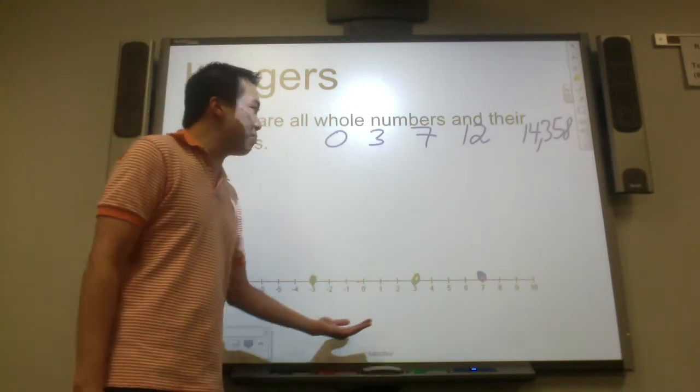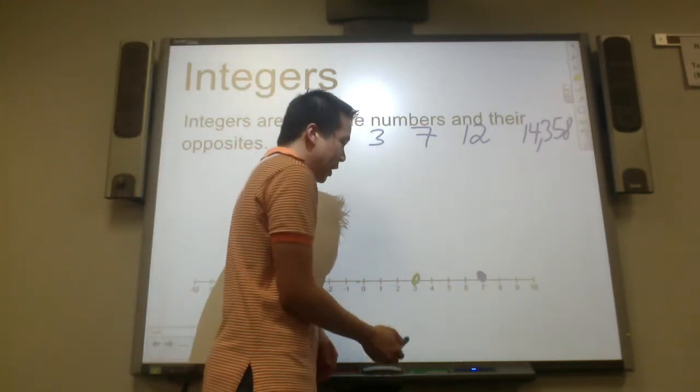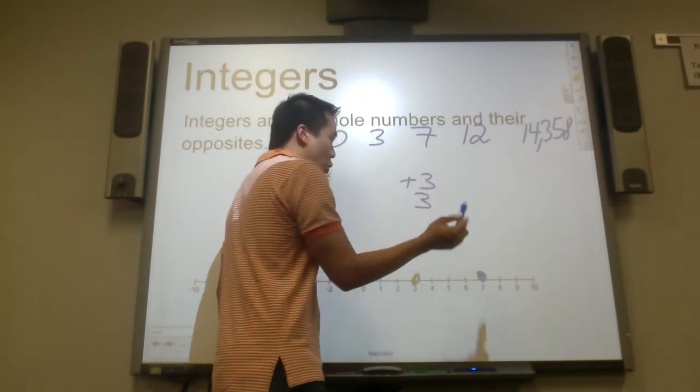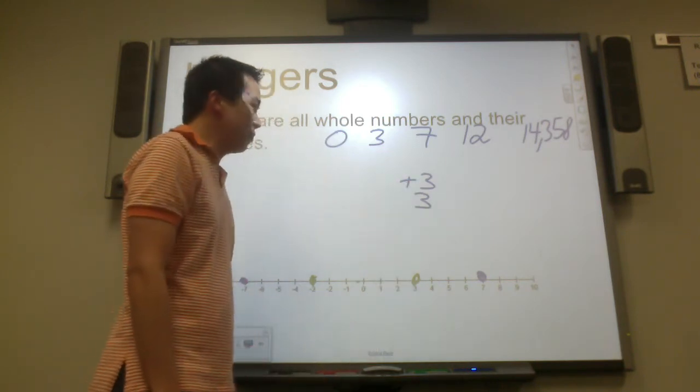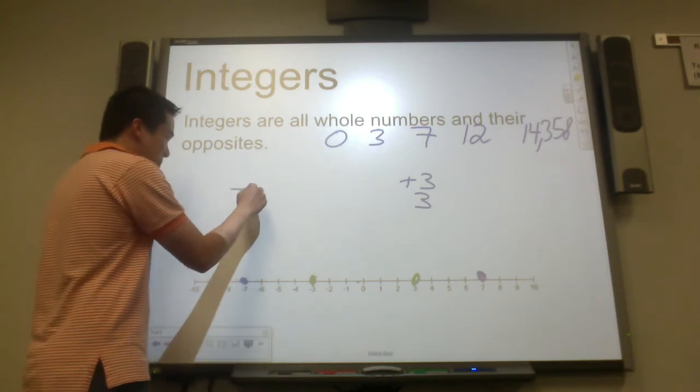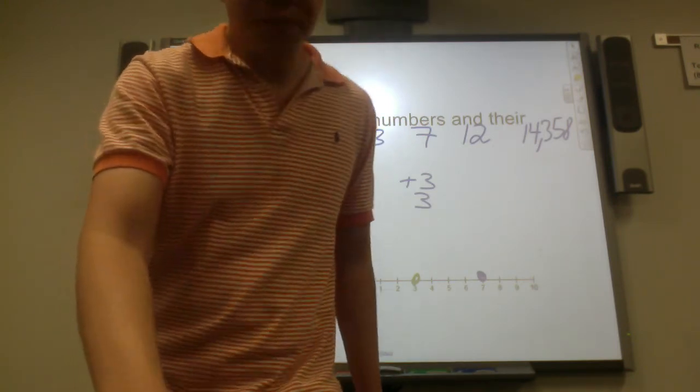So these are all examples of integers. They could be positive, negative, and you can write positive like this or this. You can put a plus sign in front of it or leave it blank. And negative numbers, these are all examples of integers.